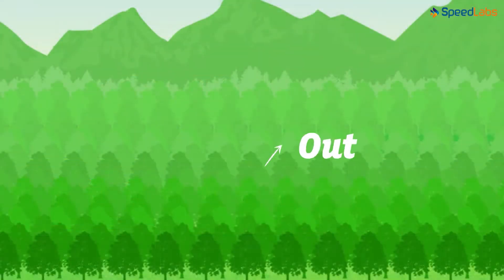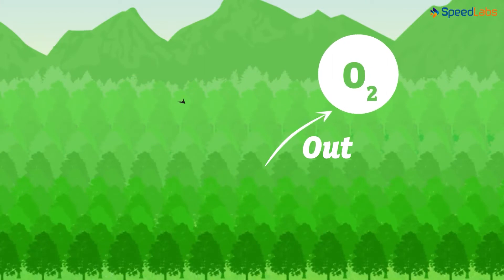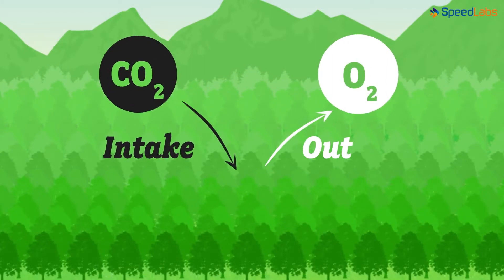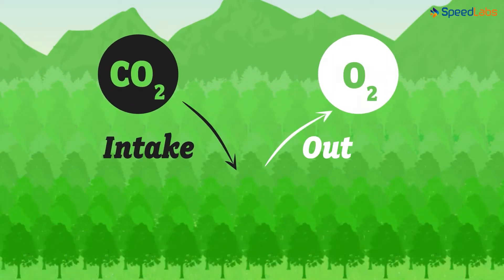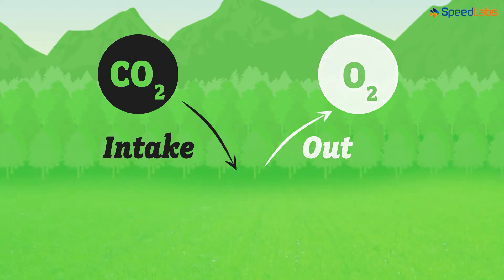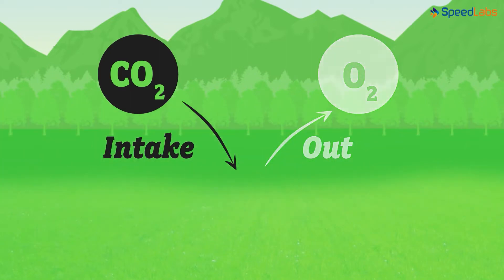You can now imagine the extent of consequences deforestation has. Let us look at each in a little more detail. Trees and plants give out oxygen and use carbon dioxide during photosynthesis. With reduced plants and trees, the level of carbon dioxide on the earth is increasing.